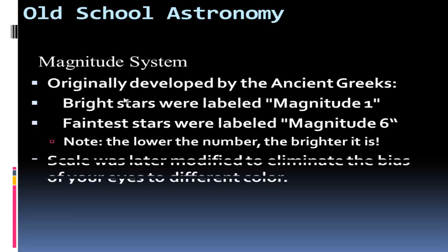There's a couple problems with this. Our eye is sensitive to certain colors more than others, so we have a bias towards certain color stars. We need to remove the eye from the telescope and put an actual instrument up there to measure how many photons of light are actually coming from a star. When we did that, we were able to modify that scale.